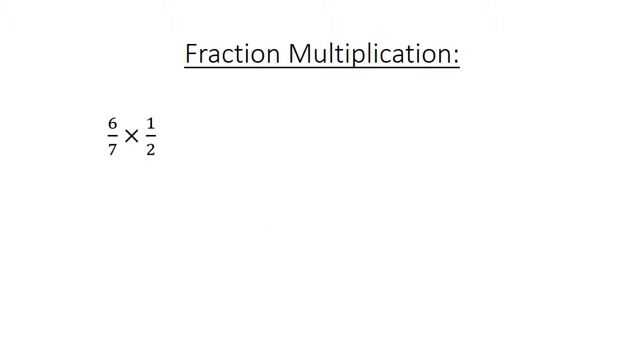Fraction multiplication. 6 over 7 times 1 over 2 equals 6 over 14. Simplify: 3 over 7.